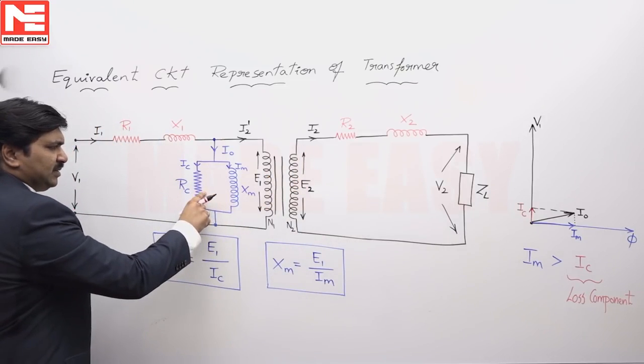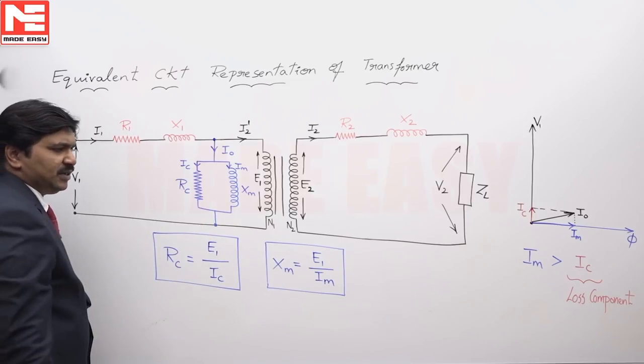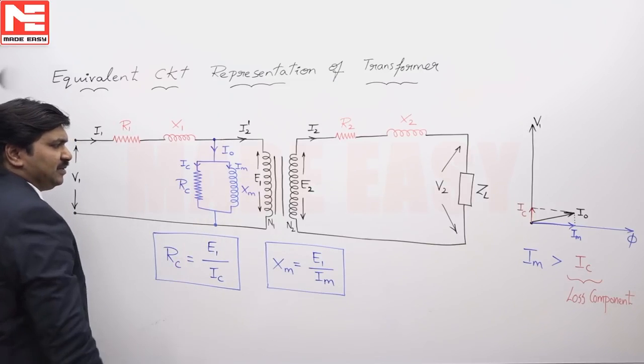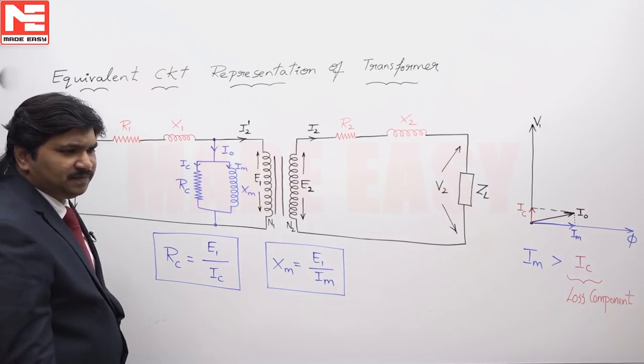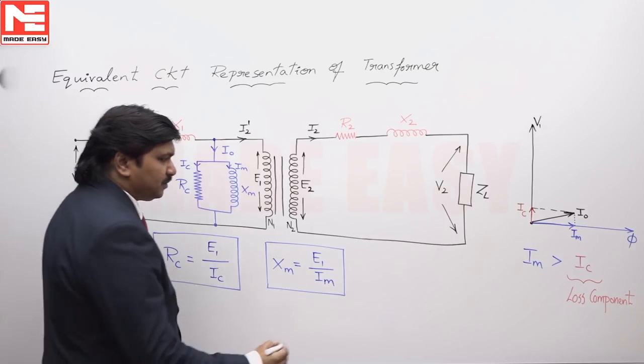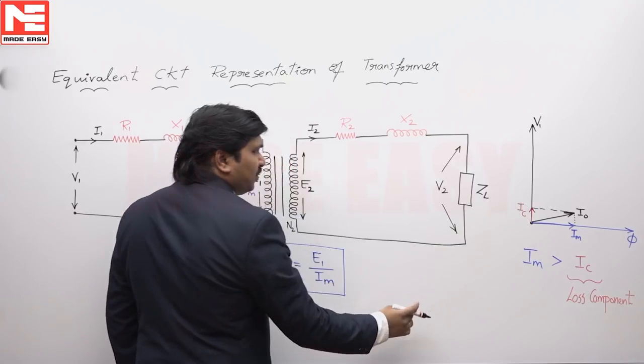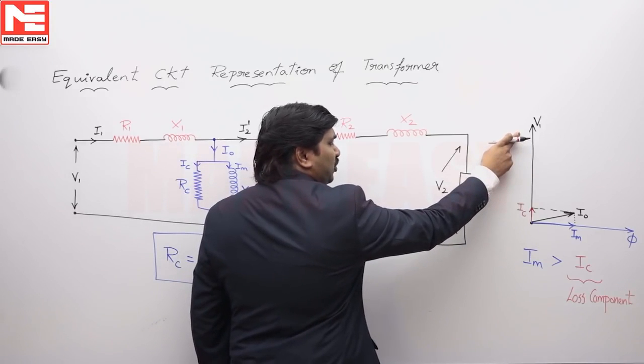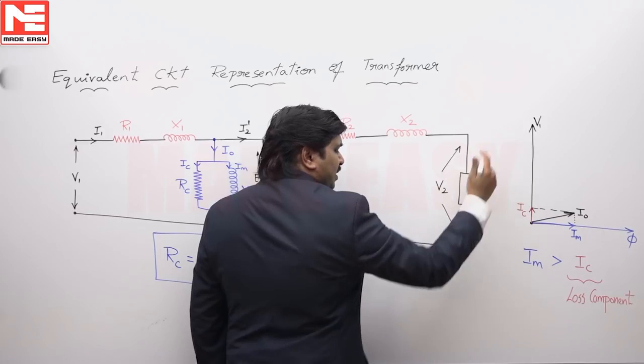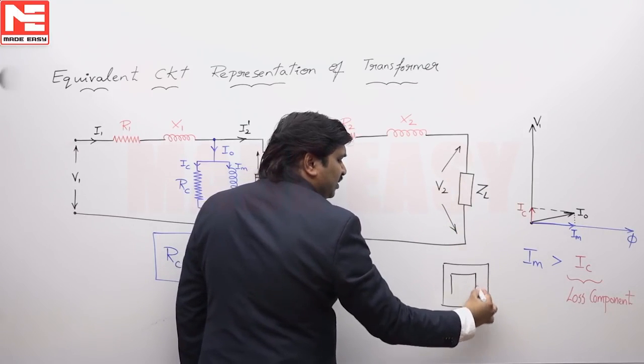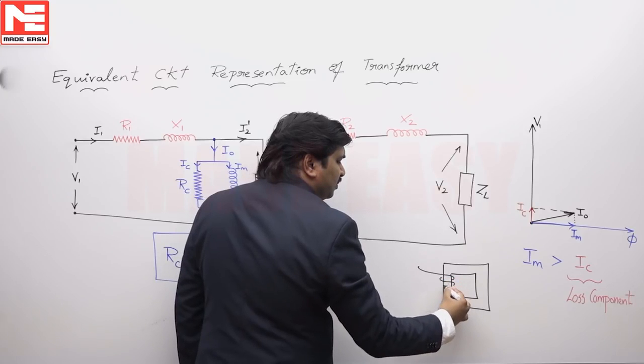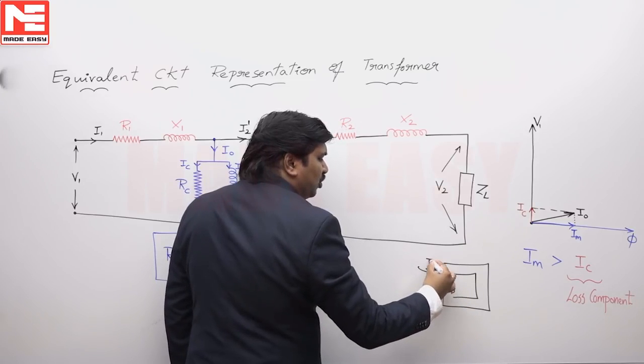This is a fictitious branch, imaginary again, because the primary current contains basically two components. Whenever we give a voltage across the primary of a transformer, the primary winding draws a current I naught.